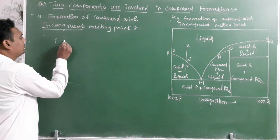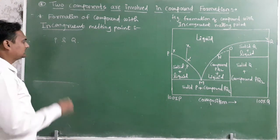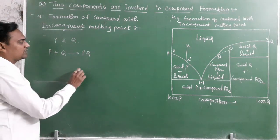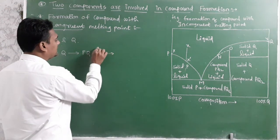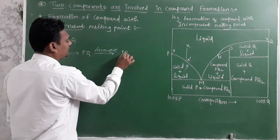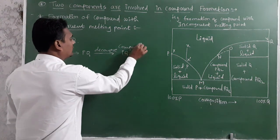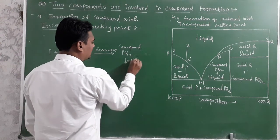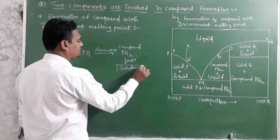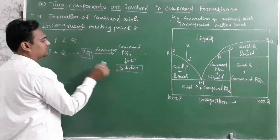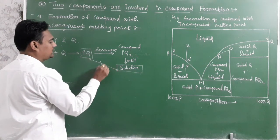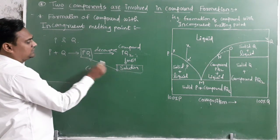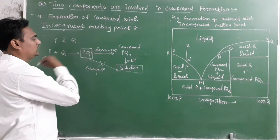In this case we have two components, P and Q. The two components combine to give compound PQ. We have a stable intermediate which then decomposes and forms a new compound PQ2. The new compound PQ2 and solution form — the stable intermediate decomposes, and the composition of the new compound and the solution is not the same.